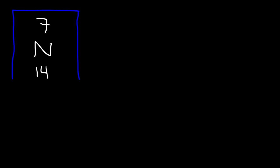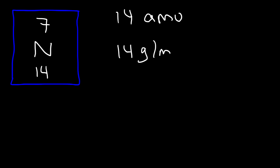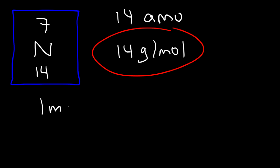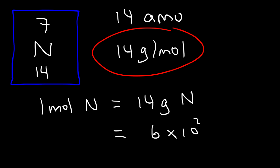Now sometimes you may need to relate moles to grams. Consider the element nitrogen. On a periodic table, nitrogen has an atomic number of 7 and a mass number of 14. We're going to focus on the mass number, which you can also represent as 14 atomic mass units. The number 14 also represents something called the molar mass — it's 14 grams per mole. So that means that 1 mole of nitrogen has a mass of 14 grams. We know that a mole is 6 times 10 to the 23 atoms, and nitrogen is just an atom. So 14 grams of nitrogen contains 6 times 10 to the 23 atoms — now you can connect everything together.